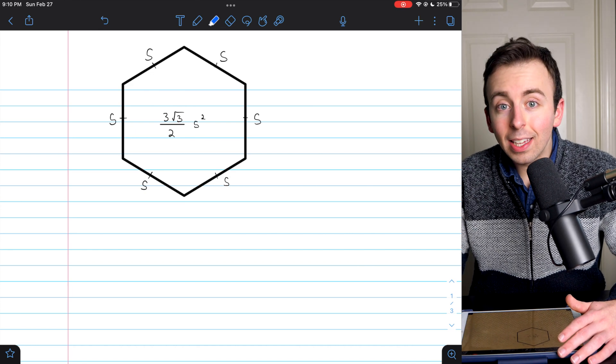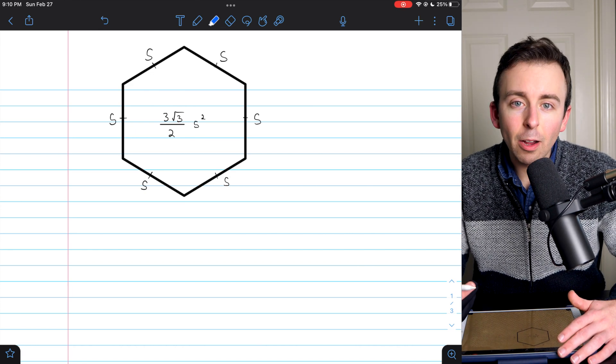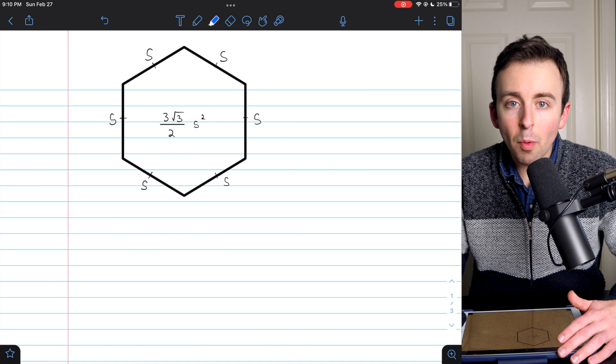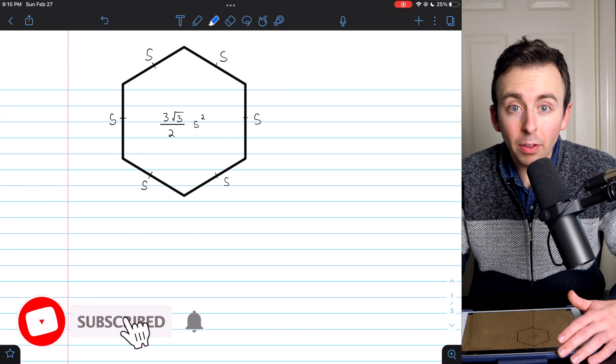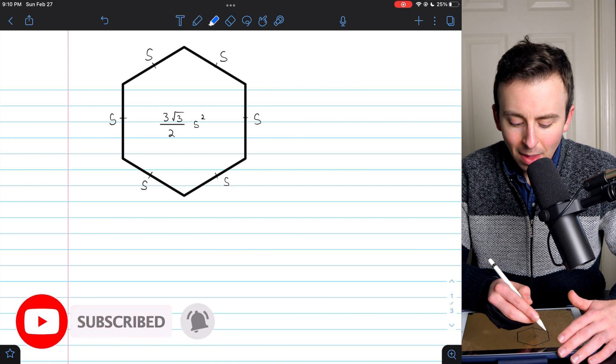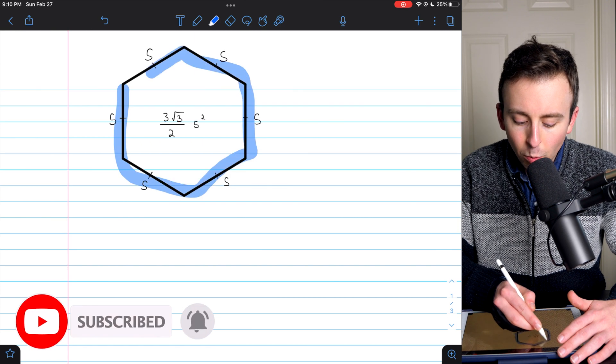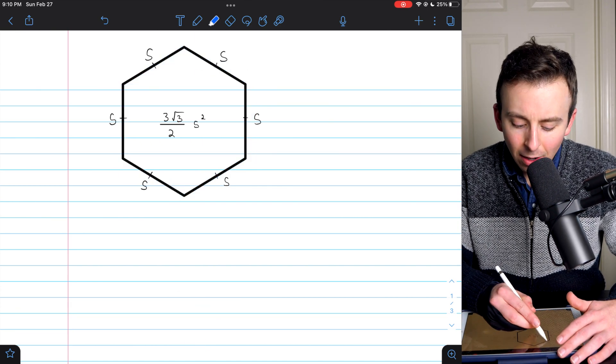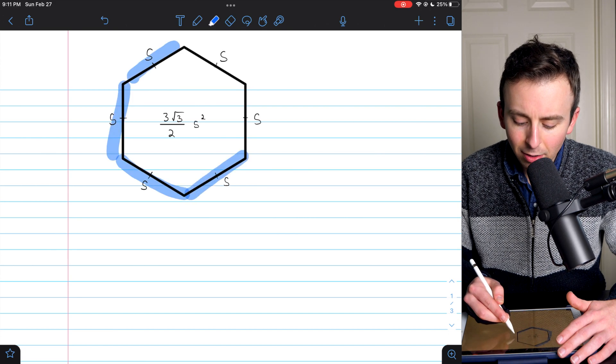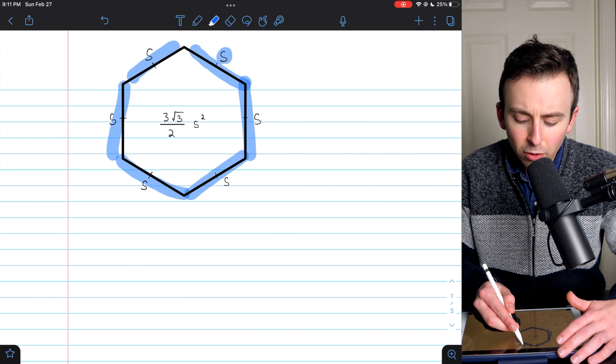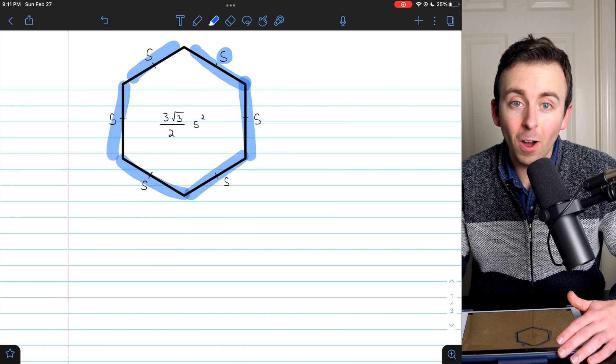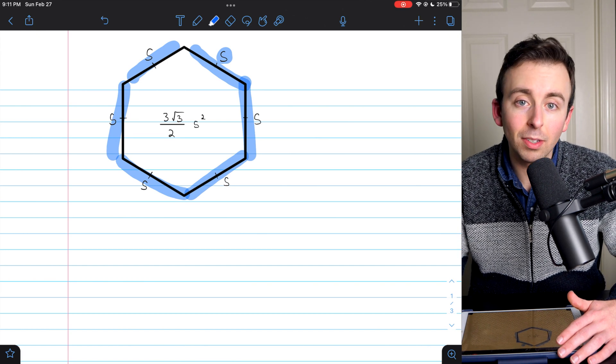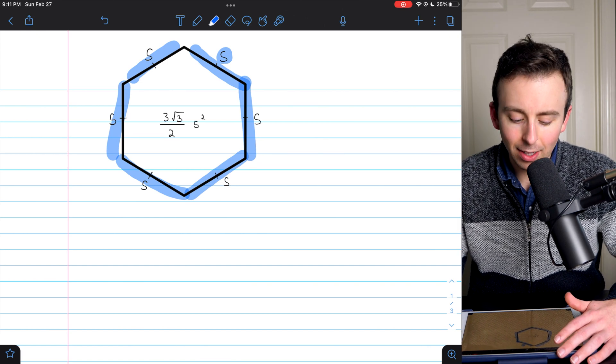Hi there. I'm going to show you how to calculate the area of a regular hexagon. Remember, regular means that all of its sides have the same length. So in this picture, we've got a regular hexagon.